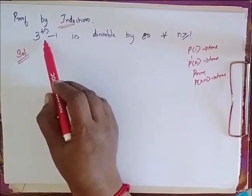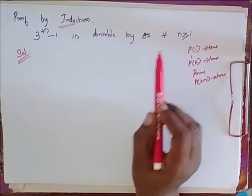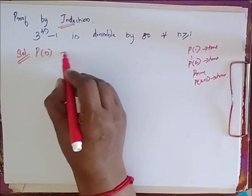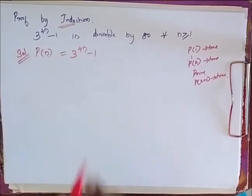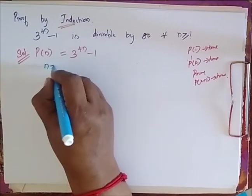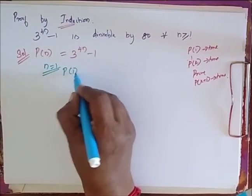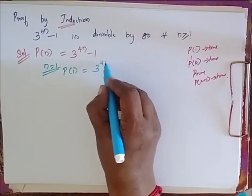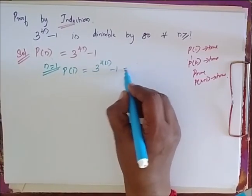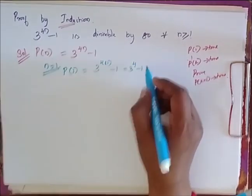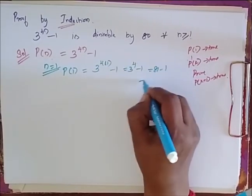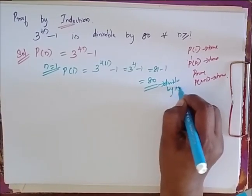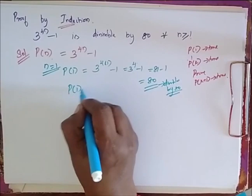The problem is: 3 to the power 4n minus 1 is divisible by 80 for every n greater than or equal to 1. I consider P of n as 3 power 4n minus 1. When I take n equal to 1, P of 1 equals 3 power 4 into 1 minus 1, which is 3 power 4 minus 1, which is 81 minus 1, which is 80 — divisible by 80. So P of 1 is true.